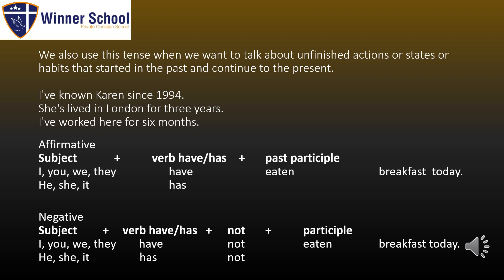For affirmative statements, we have this formula: subject or pronoun, plus verb have or has, plus past participle. For negative statements, we have: subject or pronoun, plus have or has, plus not, plus past participle.